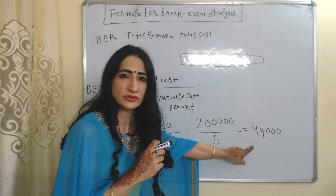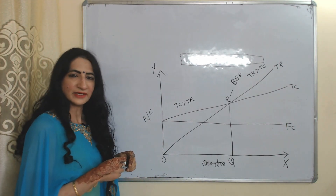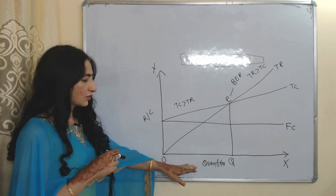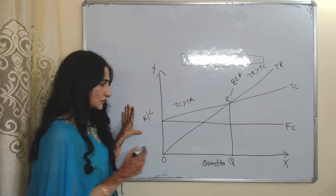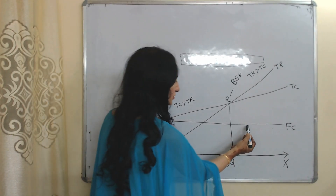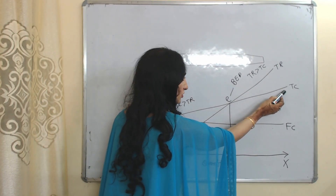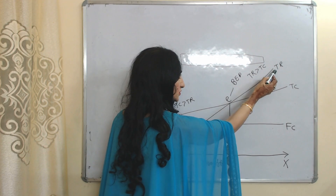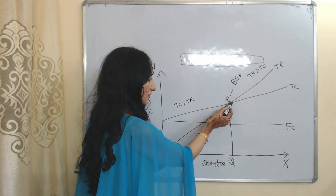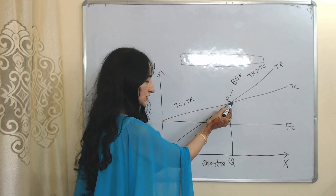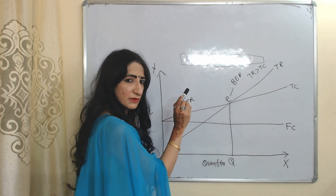Now we'll see the diagram of breakeven analysis. On the X-axis we have quantities, and on the Y-axis we have revenue and cost. The horizontal line represents fixed cost, one line represents total cost, and another represents total revenue. At point E, total revenue is equal to total cost — that is why E is called the breakeven point.